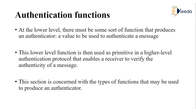This lower level function is then used as a primitive in a higher level authentication protocol that enables a receiver to verify the authenticity of a message. The lower level functions used for the higher level authentication protocols can be considered as primitives, and the higher level authentication protocols ensure the authenticity of the messages as well as the authenticity of the senders. This section is basically concerned with types of functions that may be used to produce an authenticator.